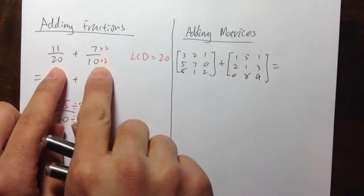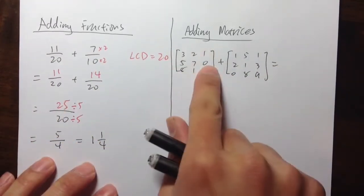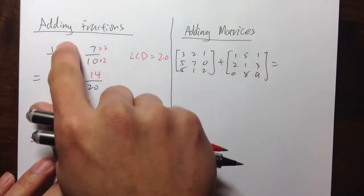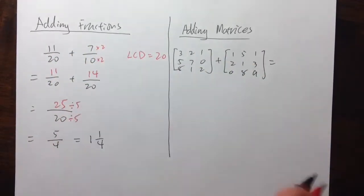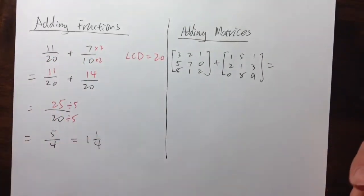I think matrices are more complicated, right? Because I have 9 numbers right here, and then plus 9 numbers right here. Compared to fractions, I have 1, 2, 3, 4. Technically, I only have 4 numbers. We don't have these 2 fractions. But how do you add matrices?